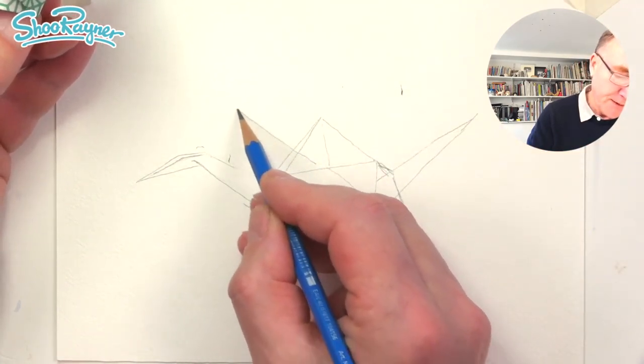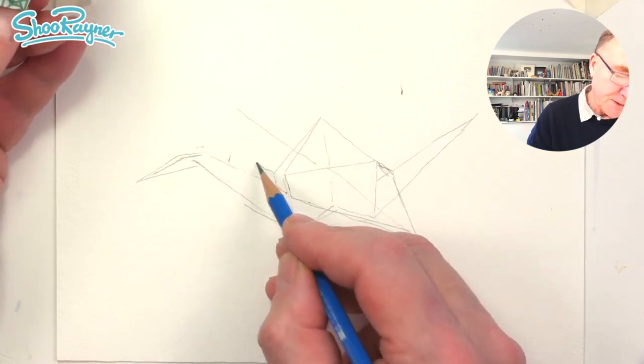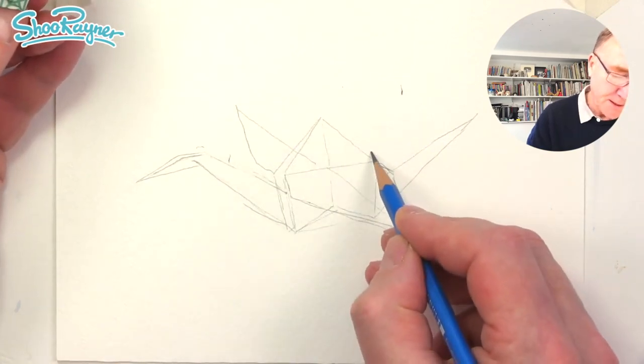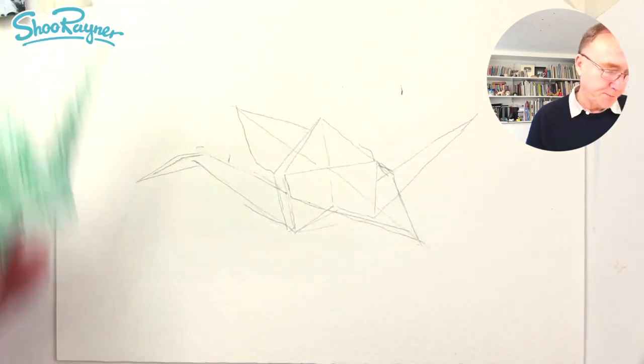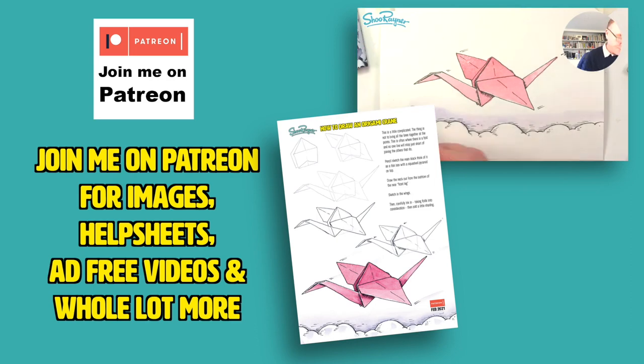That can come out a bit more and then the other one is going to sort of come out from there, so that's going to want to come out a little bit up to the top, that's going to come out a bit and up to the top like that. If you'd like a help sheet for this drawing and know how to paint it in watercolor, why don't you come and join me on Patreon.